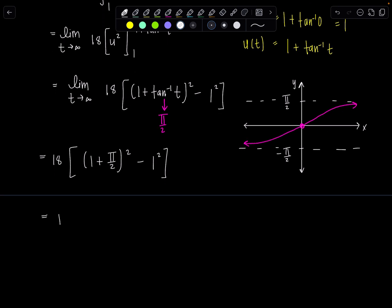That's right, 18 times, foil it out, 1 plus pi plus pi squared over 4 minus 1. These ones cancel. And then I can factor a pi out. So then I have 18 pi times 1 plus pi over 4. I'd leave it like that. And what do I care about this limit? Not so much what the value of it is, but just that this limit exists as a finite number. So this integral is also convergent.